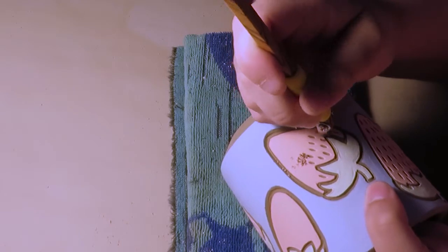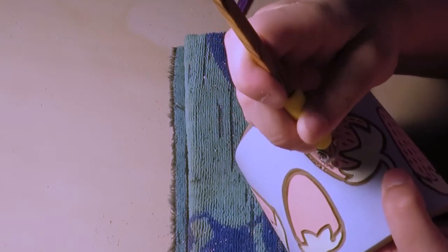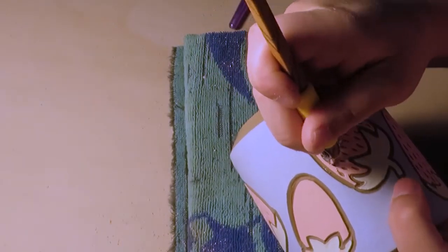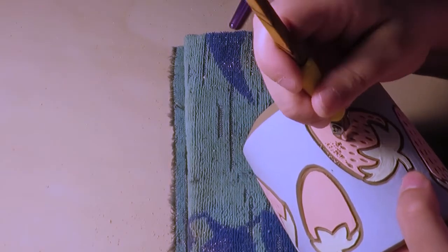After having finished all the outlines, I carved tiny seeds into each strawberry. I'm also using a dry paint brush just to get rid of the little bits of clay that I'm removing.